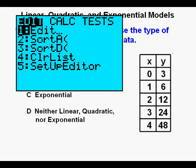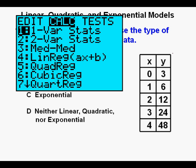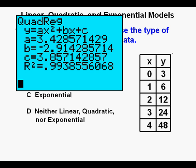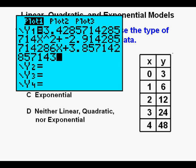Press STAT again. Arrow once to the right to the CALC submenu. First, we're going to try the quadratic regression. Arrow down to 5, Quadratic regression. Press ENTER. Press ENTER again. An R squared value close to 1 like this one of .99 means close to a perfect fit.